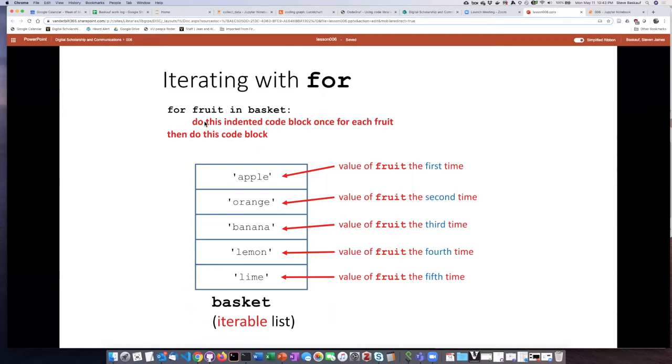And each time we iterate through one of the items on the list, we're going to do the code that is in an indented code block. And after we've iterated through every item on the list, then we will go back out and continue with the code that's not indented and go on with the rest of the script.